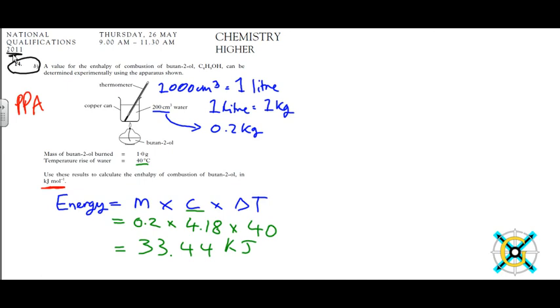We've got our answer in kilojoules, but we need to get it in kilojoules per mole. So we need to work out how many moles of butan-2-ol are in one gram.